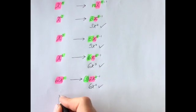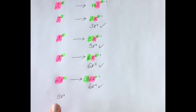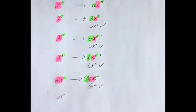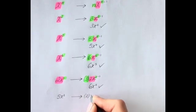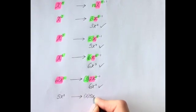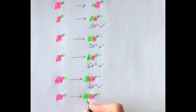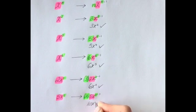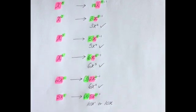Try 5x squared — differentiate this term. So bring down the power, keep the 5x, and take 1 away from the power. This simplifies to 2 times 5x, which is of course 10x. And 2 take away 1 is 1, so the answer is just 10x.